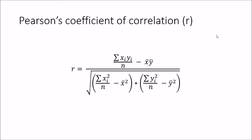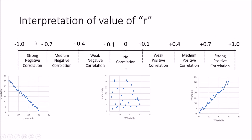Based on the value of r we can interpret different relationships between variables. Looking at this diagram, from minus 0.7 to minus 1 is the range of strong negative correlation. In strong negative correlation, as the x variable is increasing, the y variable is decreasing. If the r value falls in this range, we can say those two variables are strongly negatively correlated — when one is increasing, the other is always decreasing.